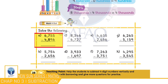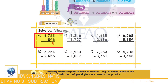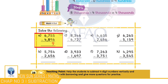Aur iske baad 1s place par maujood 15 ones mein se 6 ones ko subtract kar diya jayega jiska jawab hoga 9 ones. Aur iske baad 10s place par maujood 4 tens mein se 9 tens ko subtract karna hoga. Bacchiyon, kyunki 4, 9 se chhota hai, hum 9 ko 4 mein se subtract nahin kar sakte. Isliye hamein 700 mein se 100 yani 4 tens ko borrow karwana hoga jis ki wajah se 4 tens, 14 tens mein tabdeel ho jayenge aur 100s place par 600 reh jayenge. Aur iske baad 10s place par maujood 14 tens mein se 9 tens ko subtract karna hoga jiska jawab hoga 5 tens.